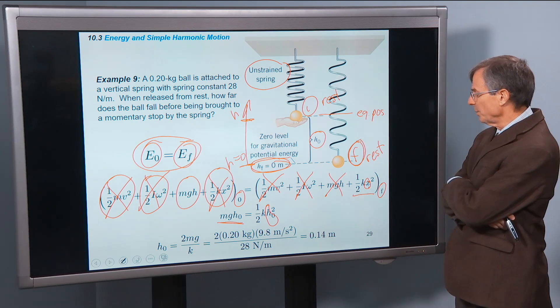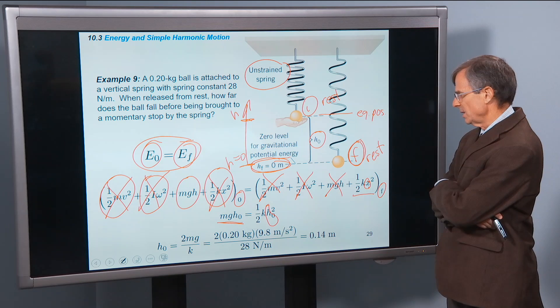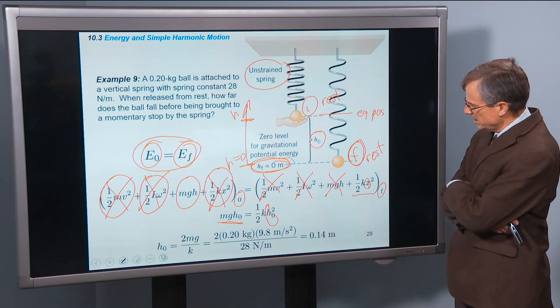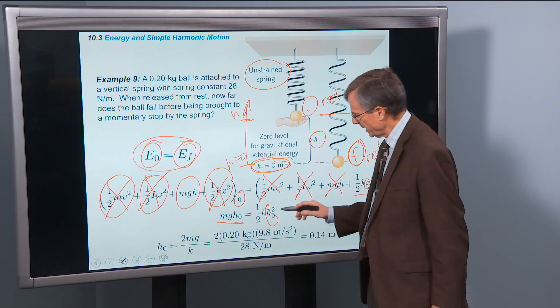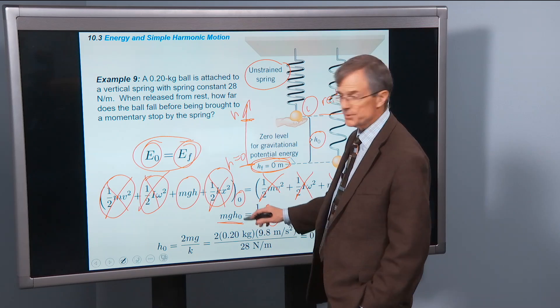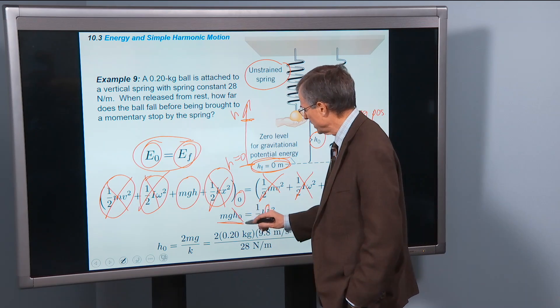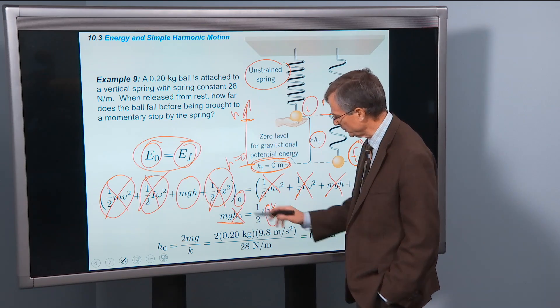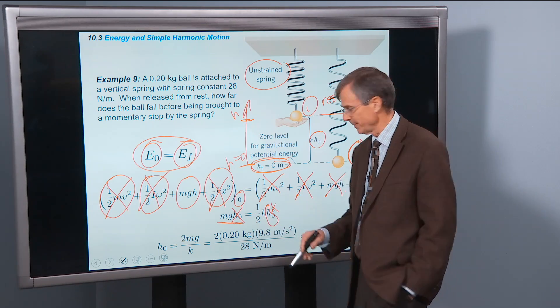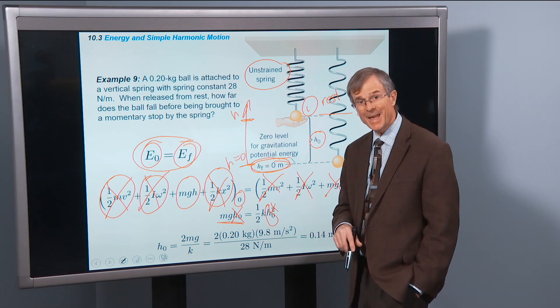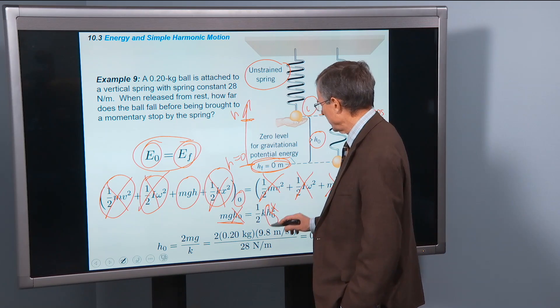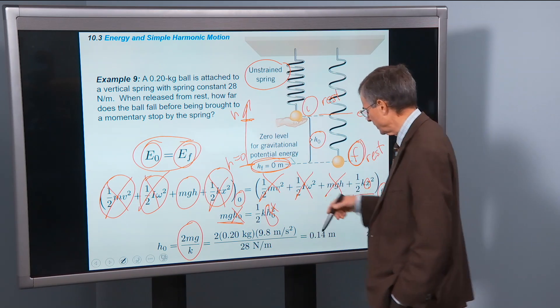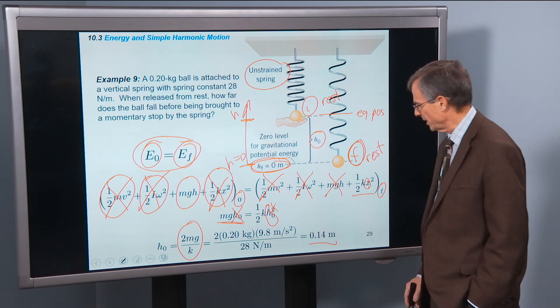So we're replacing x with h naught. And lo and behold, we can now solve for h naught. Notice here that we've got an h naught squared on the right side, and an h naught on the left side. So that this one kills one of those. And we can solve for h naught by multiplying both sides by 2, and dividing both sides by k. So we'll get h naught is 2mg divided by k. That's that equation right there. Plug the numbers in, and that tells you how far that'll stretch.